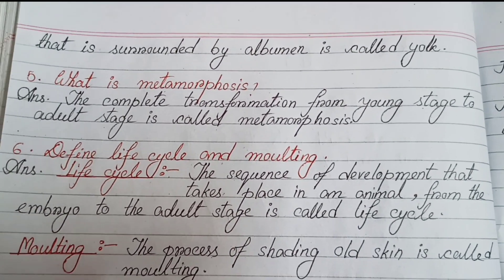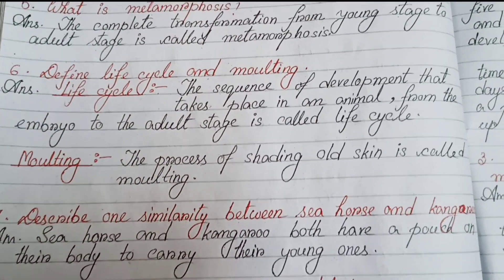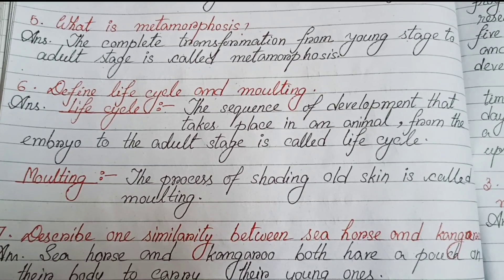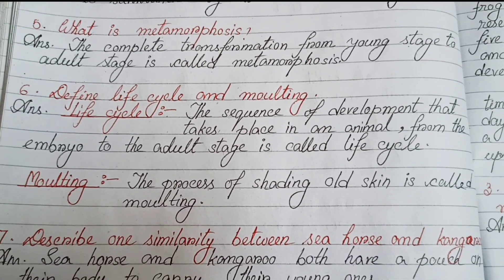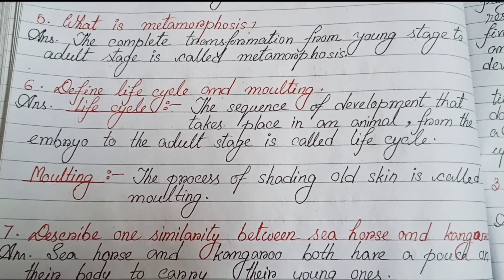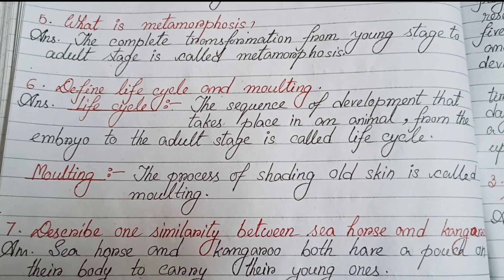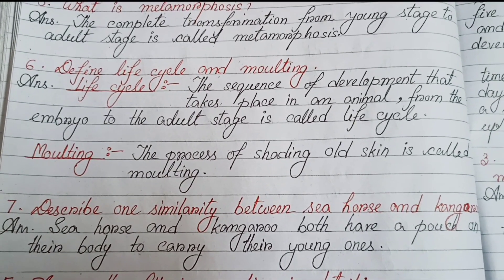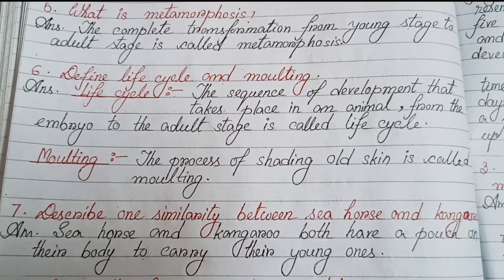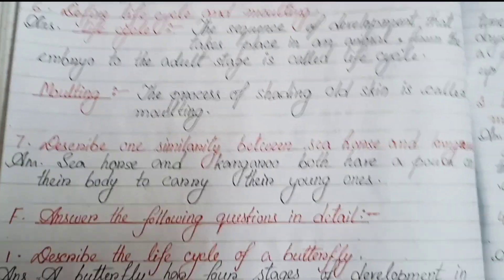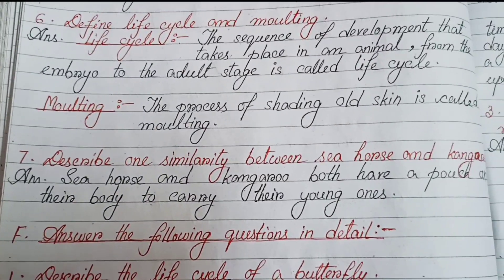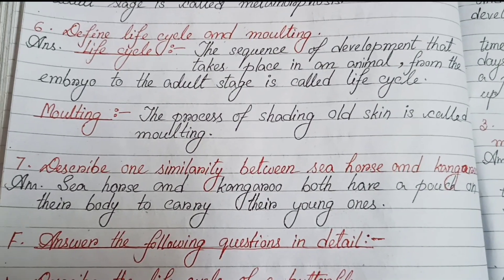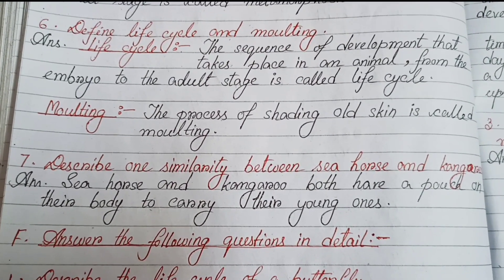Question five: What is metamorphosis? The complete transformation from young stage to adult stage is called metamorphosis. Question six: Define life cycle and moulting. Life cycle: the sequence of development that takes place in an animal from the embryo to the adult stage is called life cycle. Moulting: the process of shedding old skin is called moulting.